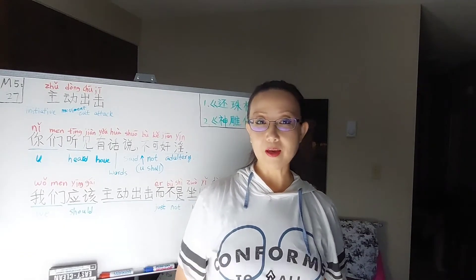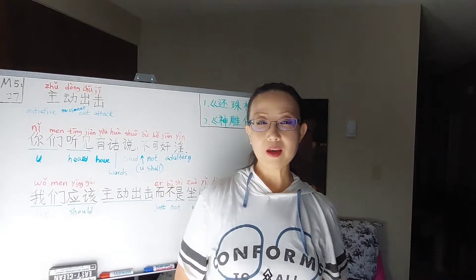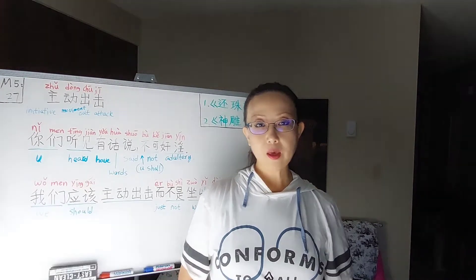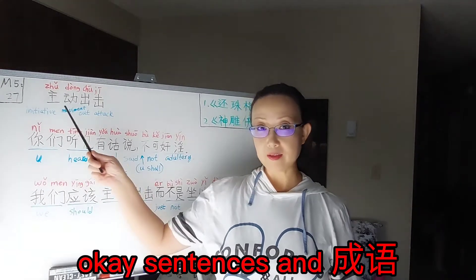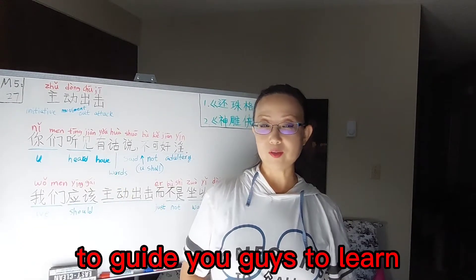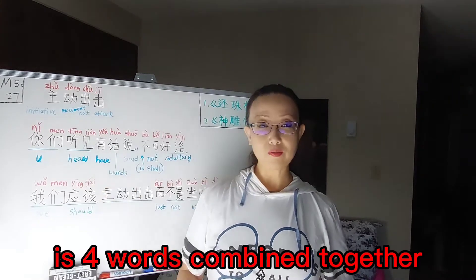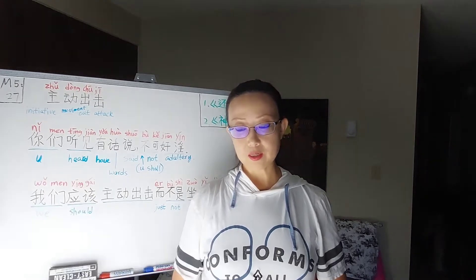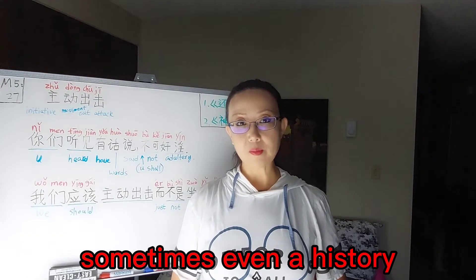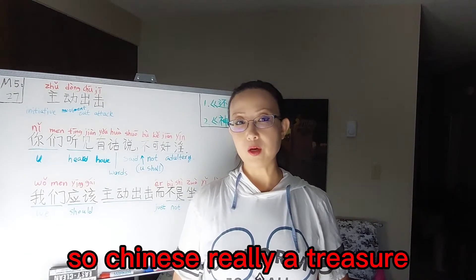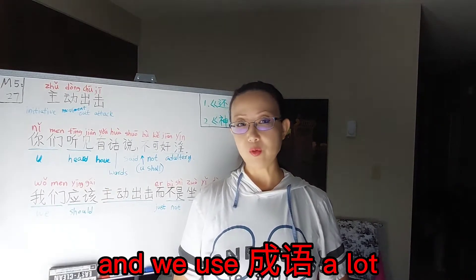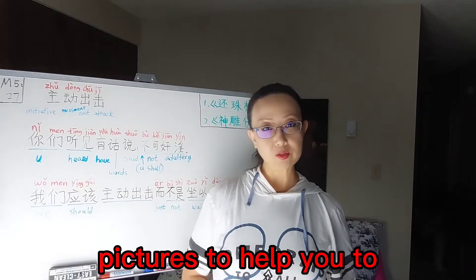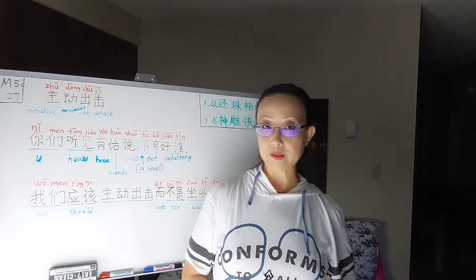In this lesson, I will use a strategy that combines speaking, listening, reading, and writing Chinese characters. I will use sentences and cheng yu to guide you to learn Chinese. Cheng yu is four words combined together — it explains a situation, sometimes a story, sometimes even a history. So cheng yu is really a treasure for you, and we use cheng yu a lot. If possible, I will use pictures to help you understand easily and remember well.